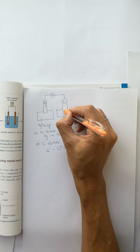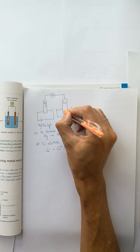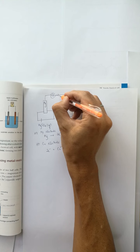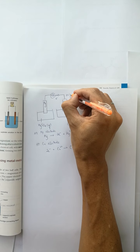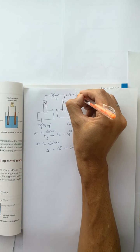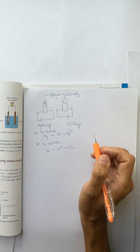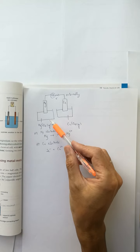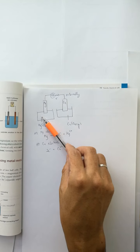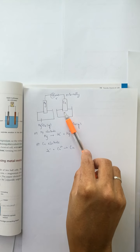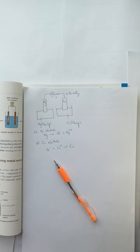The electrons move externally from magnesium to copper. However, the circuit is not complete, so we need to connect the two beakers together.